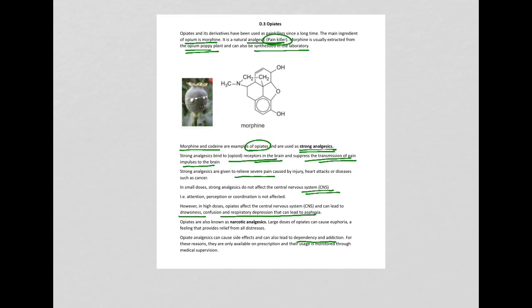Opiates are also known as narcotic analgesics. In high doses, they can cause euphoria, where the person has the impression that all distresses have been relieved. But this can also lead to dependency and addiction. For these reasons, opiates are only available on prescription.